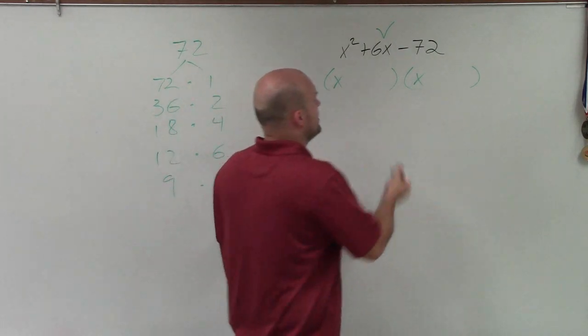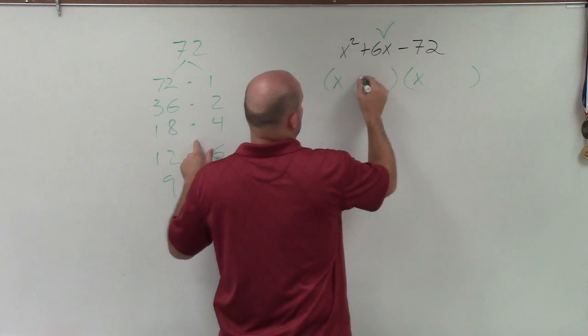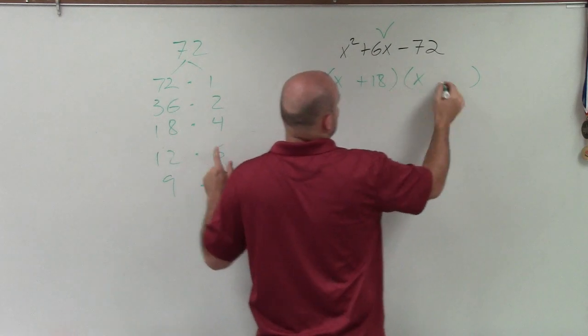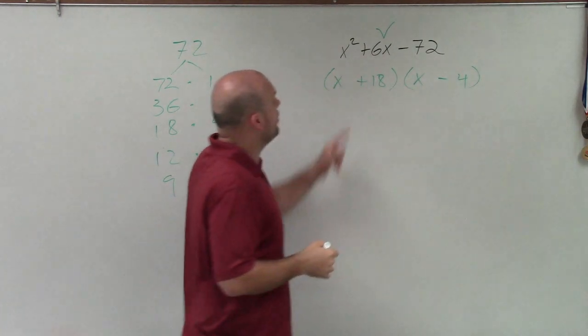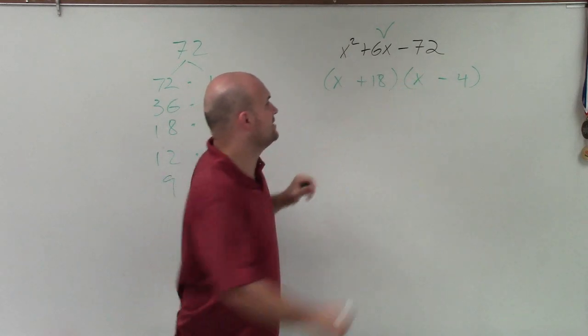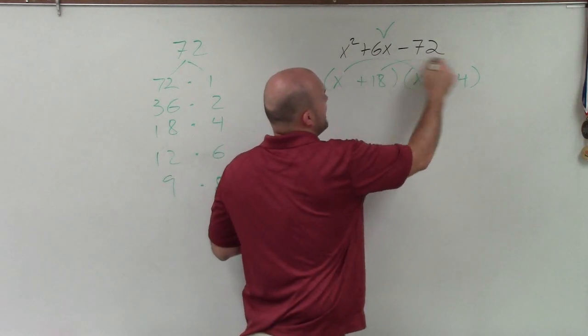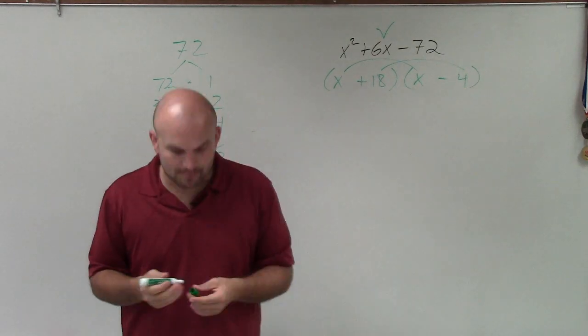when I multiply these two numbers, let's use 18 and 4, right? And let's say it's going to be positive 18 minus 4. Well, I know 18 times negative 4 gives me negative 72.